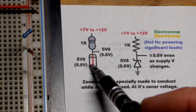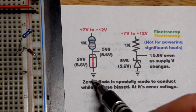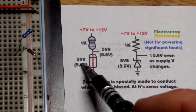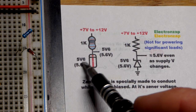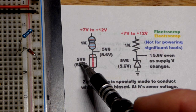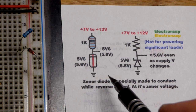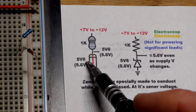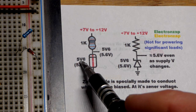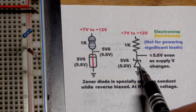The Zener voltage does vary a tiny bit with how much current is flowing through it once current really starts flowing. But it holds pretty steady, especially if you're in the 5-volt range. Some of the lower value ones may drift more or less, but generally you stay pretty close to the Zener voltage.